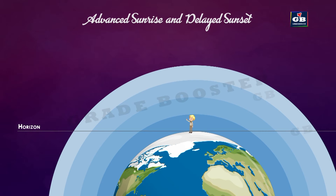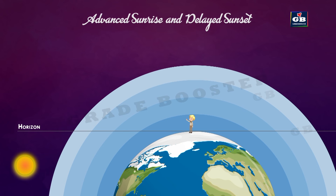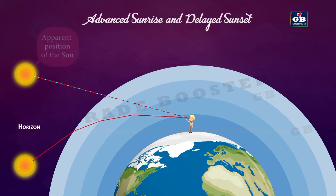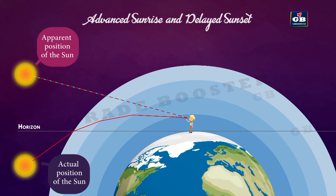Advanced sunrise and delayed sunset: when sunlight enters the atmosphere, due to atmospheric refraction it bends, and the sun becomes visible to us before actually crossing the horizon. So the sun is visible about 2 minutes before the actual sunrise — that position is called the apparent position of the sun. Similarly, about 2 minutes after the actual sunset, we can still see the sun because of atmospheric refraction.